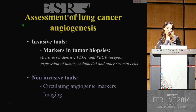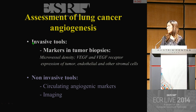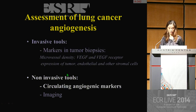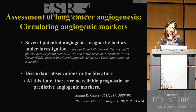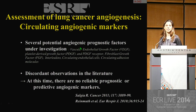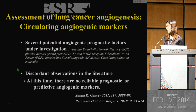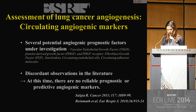Currently, there are several methods for assessing lung cancer angiogenesis, including invasive tools such as markers in tumor biopsies, or non-invasive tools such as circulating angiogenic markers, with several potential prognostic factors under investigation. With discordant observations in the literature, therefore at this time, there are no reliable prognostic or predictive angiogenic markers.